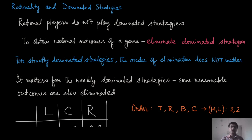In this module we are going to discuss the interplay of rationality with dominated strategies. Since rationality means that the player always wants to maximize its own payoff, it is very natural to assume that rational players do not play dominated strategies — whether weakly or strictly dominated, they will always have a better option. So instead, we can eliminate all these dominated strategies to find reasonable outcomes of a game.